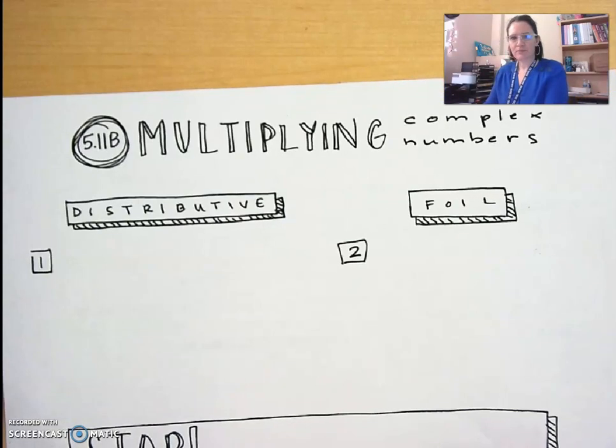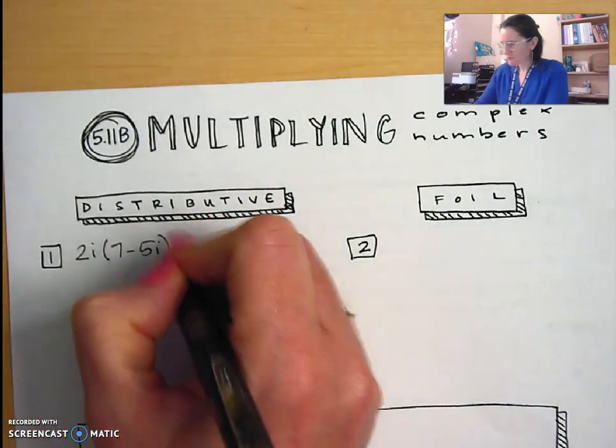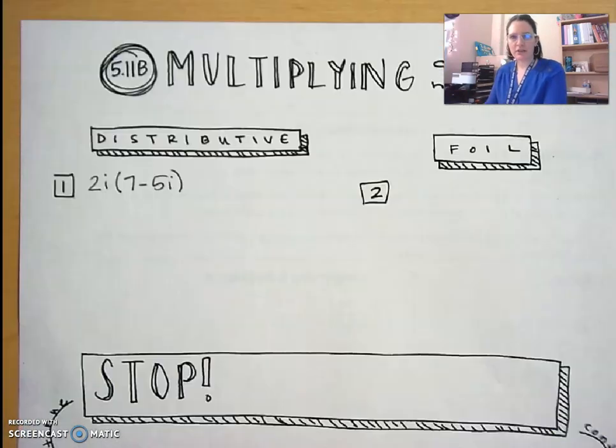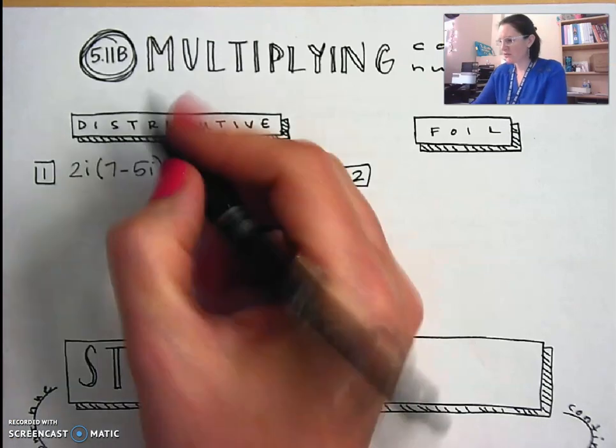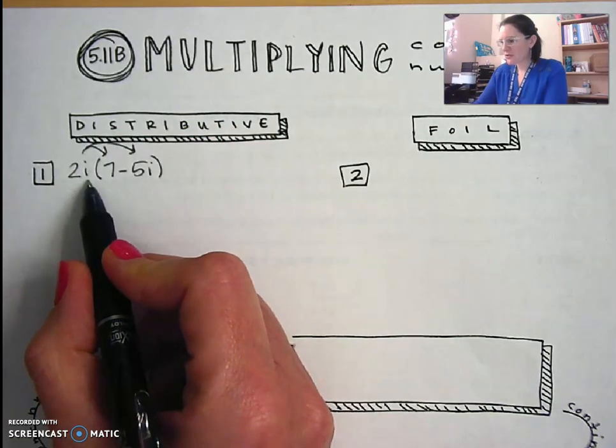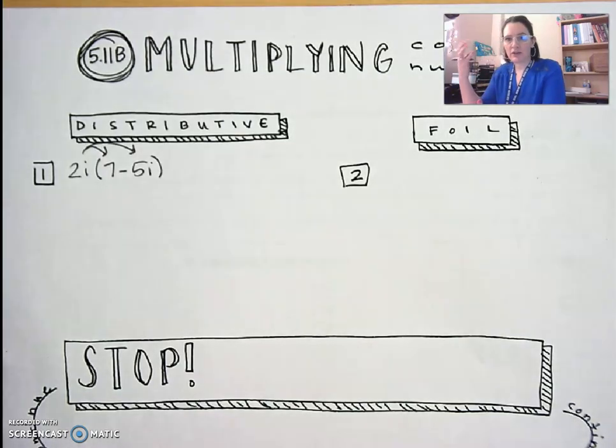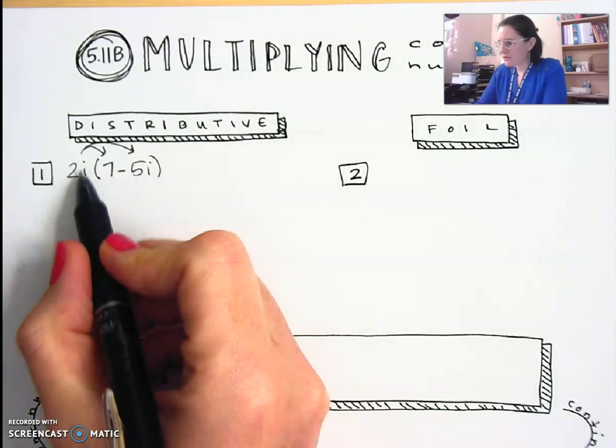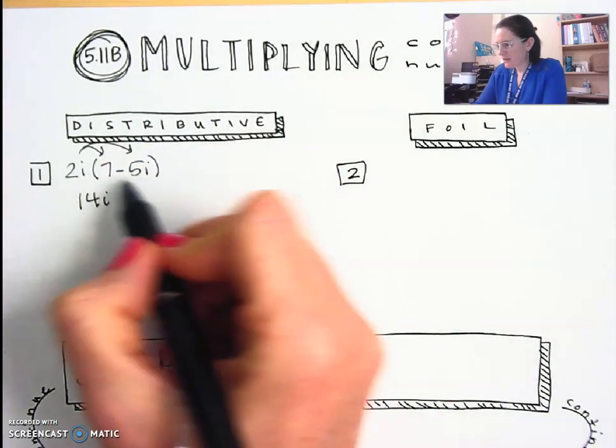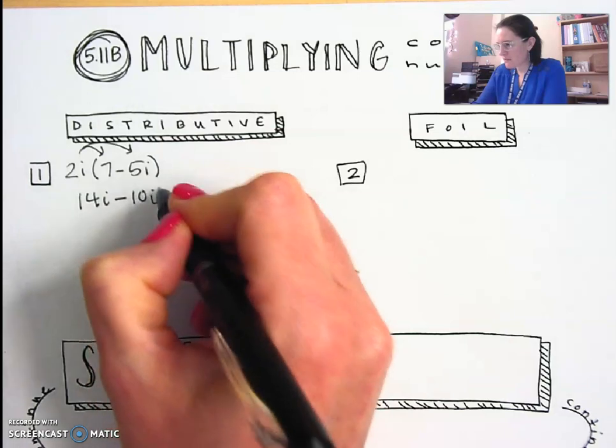We're going to start by covering how to use distributive property when talking about complex numbers. So here I have 2i times 7 minus 5i. So I'm going to distribute that 2i. Even though we talked about yesterday that i is not a variable, it doesn't represent an unknown value, it represents square root of negative 1. But when you're doing operations on it, it does work like a variable. So when I do 2i times 7 that gives me 14i. And then positive times negative is negative, and 2i times 5i is 10i squared.